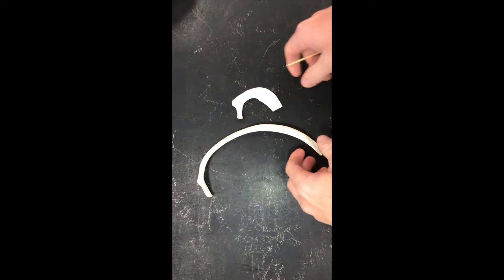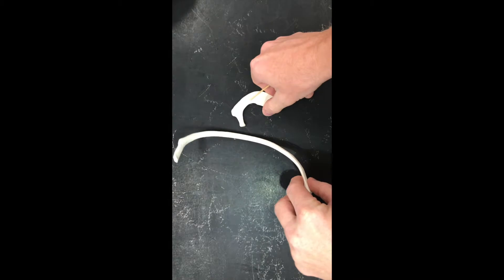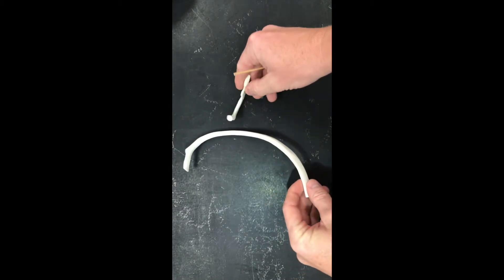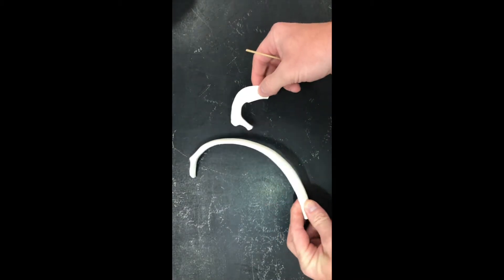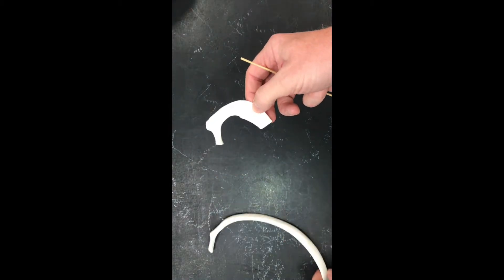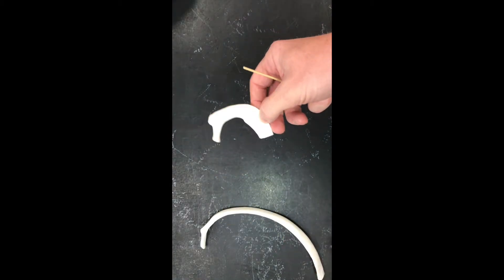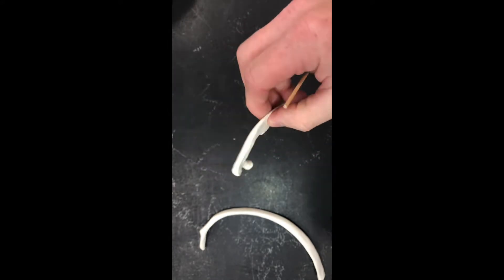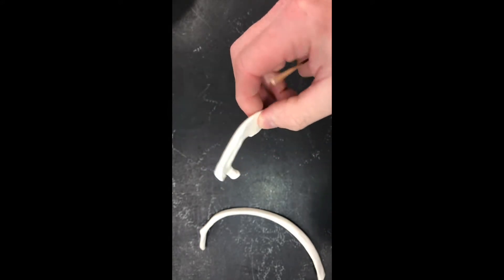The first seven ribs are true ribs, and all others are false, including the floating ribs. The main thing to notice is to identify different shapes — you should know what is called a rib and what is the first rib. The first rib has a C-shape, looks somewhat like a seahorse, and is very flat.